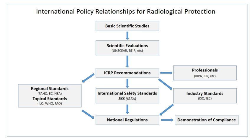The ICRP uses the following overall principles for all controllable exposure situations. Justification: no unnecessary use of radiation is permitted, which means that the advantages must outweigh the disadvantages. Limitation: each individual must be protected against risks that are too great, through the application of individual radiation dose limits. Optimization: this process is intended for application to those situations that have been deemed to be justified. It means "the likelihood of incurring exposures, the number of people exposed, and the magnitude of their individual doses" should all be kept as low as reasonably achievable, taking into account economic and societal factors.